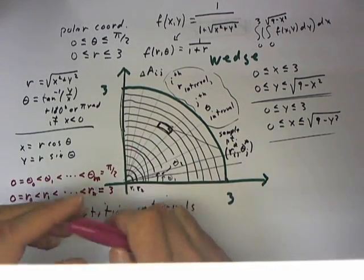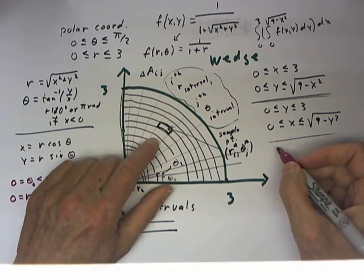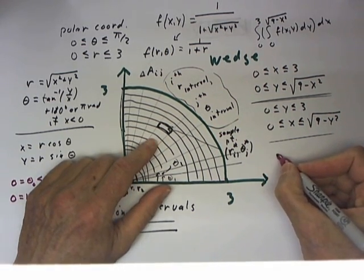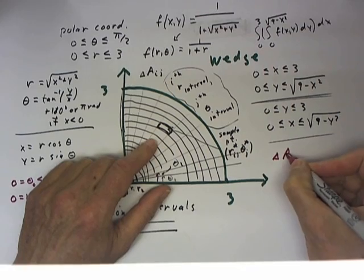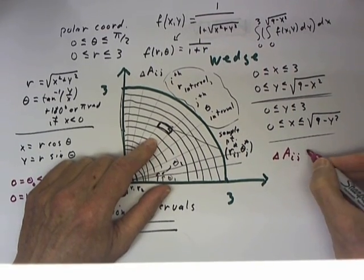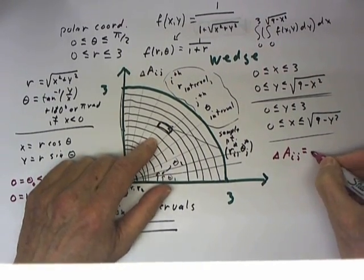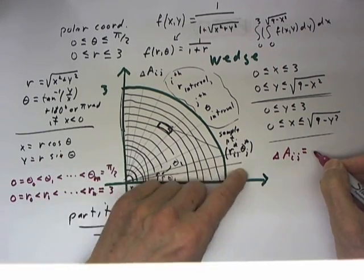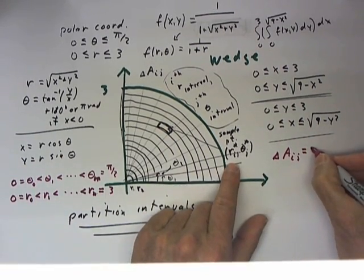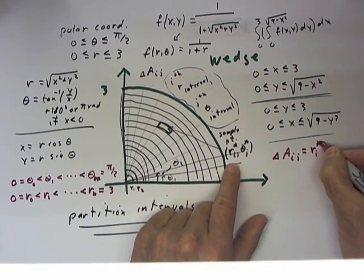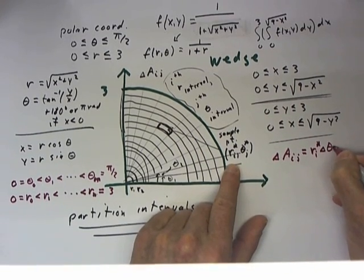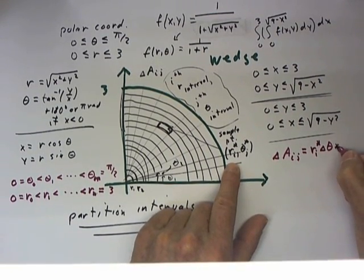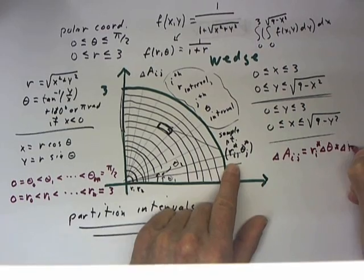The area of this interval is, therefore, delta a_ij, which equals the radius times delta theta. The radius is r_i* delta theta, multiplied by delta r.